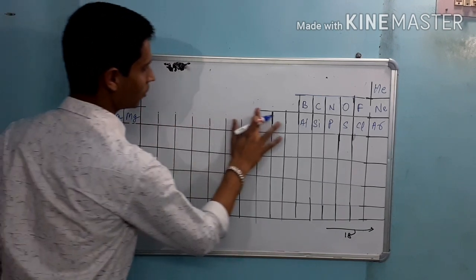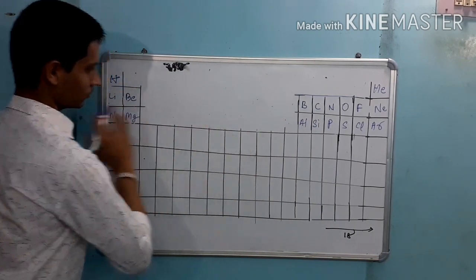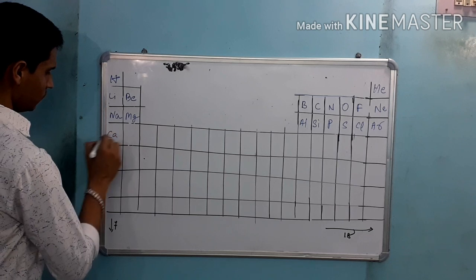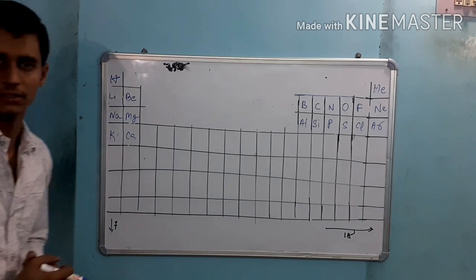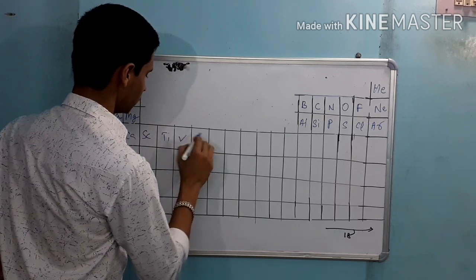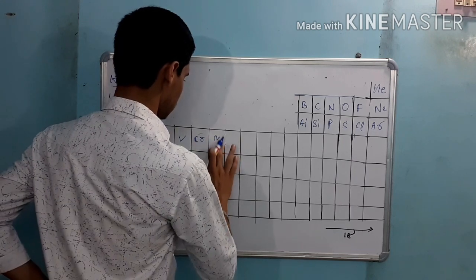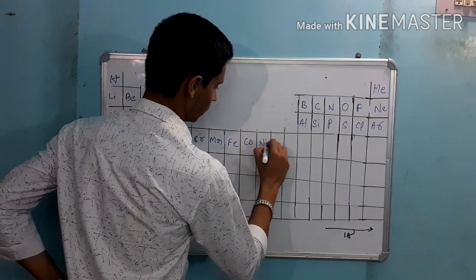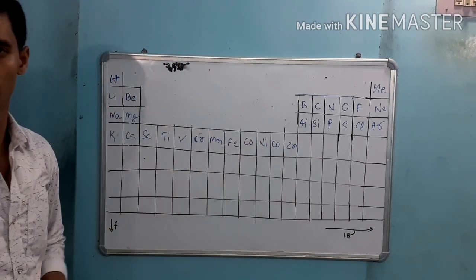The next elements are potassium and calcium — you're ready, that's 20 elements. Then scandium, titanium, vanadium, chromium, manganese, iron, cobalt, nickel, and zinc. These are the first transition series elements.